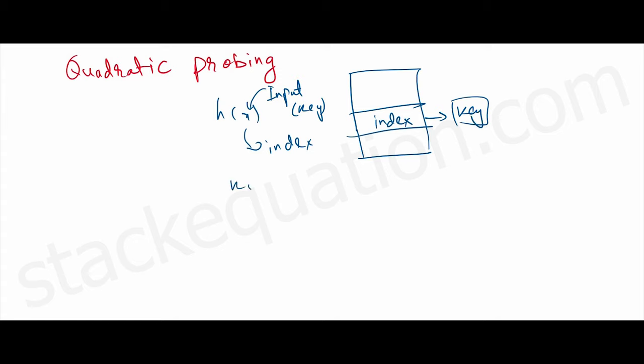Now what happens is for two or more inputs, it returns the same index, and that leads to collision.